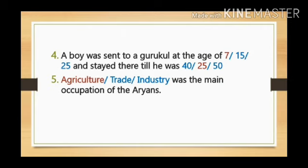Because after the age of 25, he would enter into his second stage of life, i.e. Grihastha. Therefore, the correct answer for question number 4 is: a boy was sent to a Gurukul at the age of 7 and stayed there till he was 25. Question number 5: Dash was the main occupation of the Aryans. Options are agriculture, trade, and industry. The correct answer is agriculture.